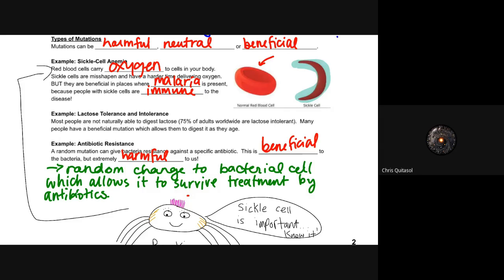Because even though sickle cell anemia is bad for you, malaria is significantly worse. People can deal with being a little bit tired and not quite having the best O2 and glucose levels, but if you're sick with malaria and you die, well, that's significantly worse than just being a little tired day to day. Another example that we'll talk about often, especially next year, is lactose tolerance and intolerance. The vast majority of people are unable to digest lactose, 75% of adults worldwide, and many people have a beneficial mutation which allows them to digest it as they age. Many people within the Caucasian population maintain that genetic mutation that allows for them to digest lactose throughout their life.